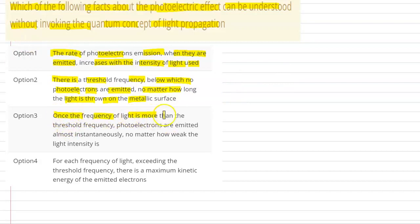Third, once the frequency of the light is more than the threshold frequency, photoelectrons are emitted almost instantaneously, no matter how weak the light intensity. Fourth, for each frequency of light exceeding the threshold frequency, there is a maximum kinetic energy of the emitted electrons. All the parameters are written.